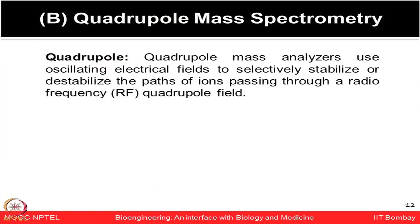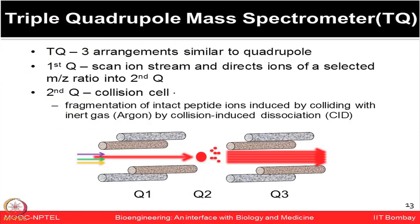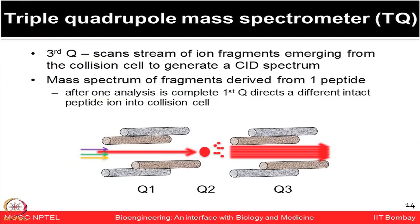Another popular configuration is quadrupole-based mass spec. These mass analyzers use oscillating electric fields to selectively stabilize or destabilize the path of ions passing through the radio-frequency quadrupole field. In a triple quadrupole, the first quadrupole scans the ion stream and directs ions of a selected mass-to-charge ratio. Those selected ions are then fragmented in a collision cell using collision-induced dissociation with inert gases like argon. The third quadrupole then scans the stream of ion fragments from the collision cell, generating the CID spectrum.